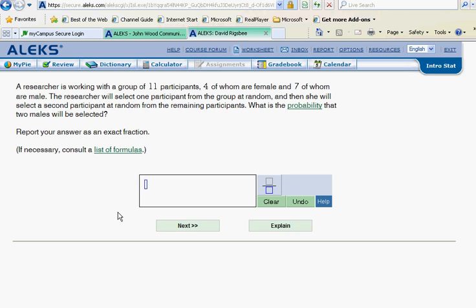The researcher will select one participant at random from the group, and then she will select a second participant at random from the remaining participants. What is the probability that two males will be selected?